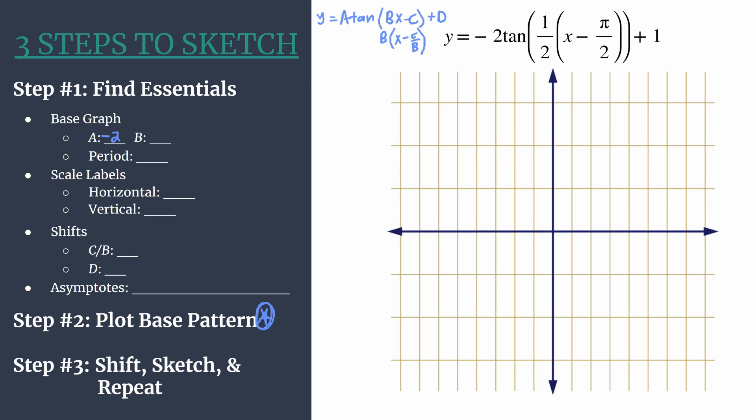Second, we have b. We see b is the coefficient in front of x, so that's 1 half. That tells us we will have half a cycle of tangent between zero and pi for this graph. And it also helps us find our period. For tangent, we calculate that by pi over b. So we have pi divided by 1 half, so that's like times 2. So our period is going to be 2 pi. And that's just the length of one horizontal cycle.